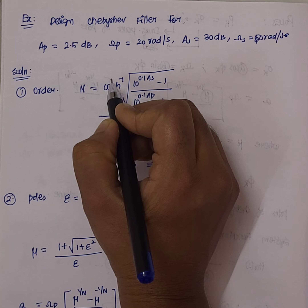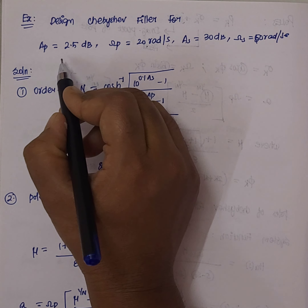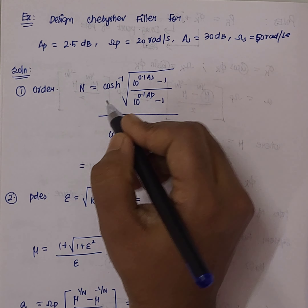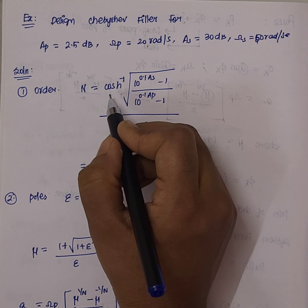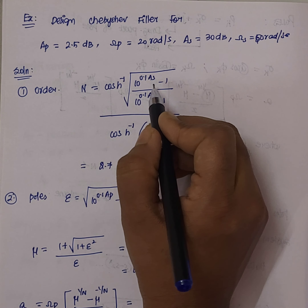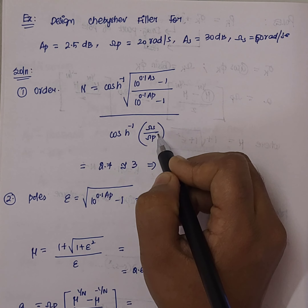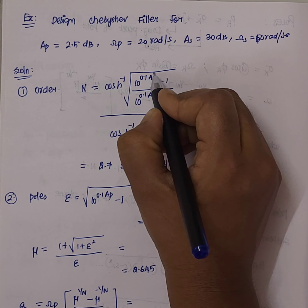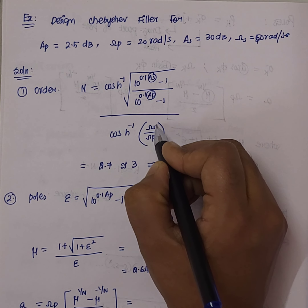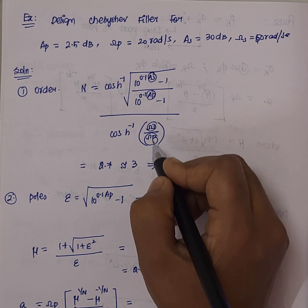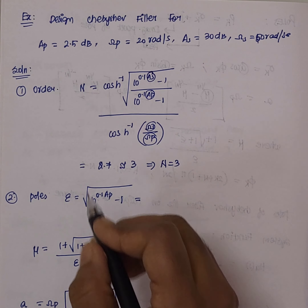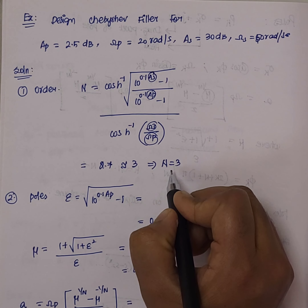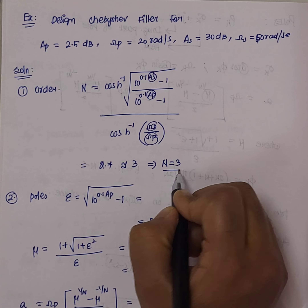Let's solve an example: design a Chebyshev filter for given values of a_p, a_s, omega_p, and omega_s. First, we calculate the order using the cosh inverse formula. The values are similar to those used in the Butterworth filter. Substituting the given a_p, a_s, omega_p, and omega_s values, we get n equals 2.7, which we round up to n equals 3.